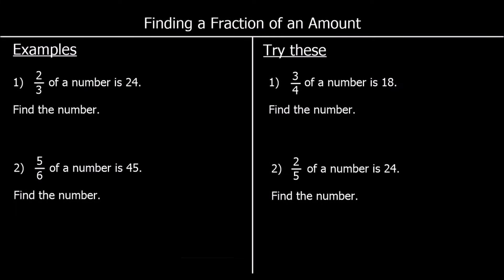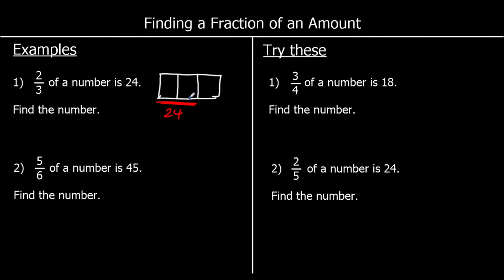Here's a different question. We've got: two thirds of a number is 24 — find the number. So we've got a number split into thirds, so three parts. And we're told two of the bits make 24. So we can work out what one of the bits is by halving 24. Half of 24 is 12, so each bit must be worth 12. So what's the number? It's three lots of 12, which is 36.